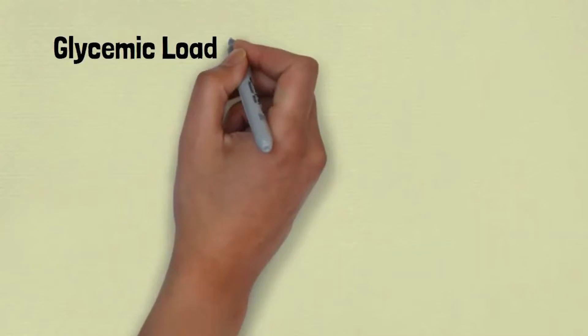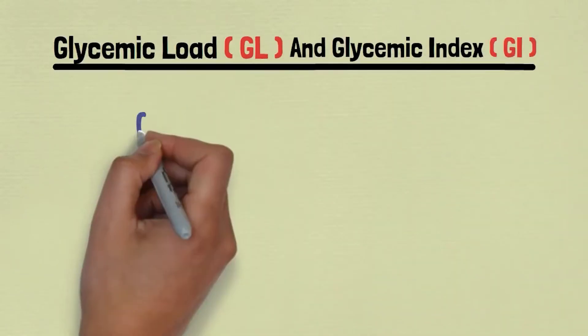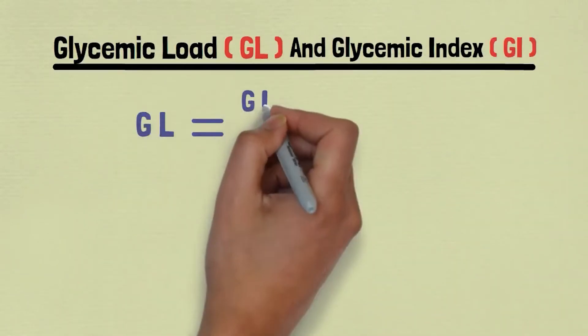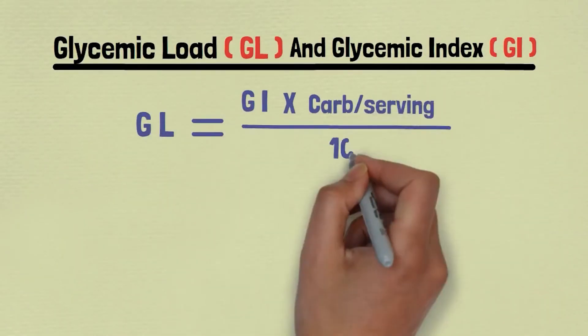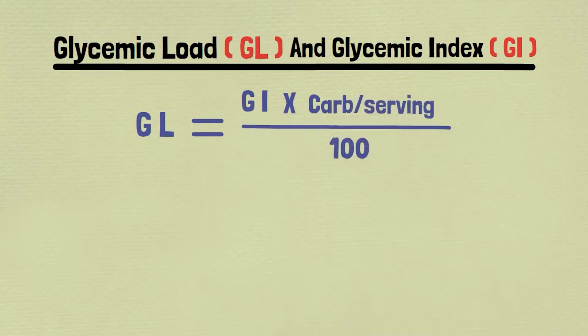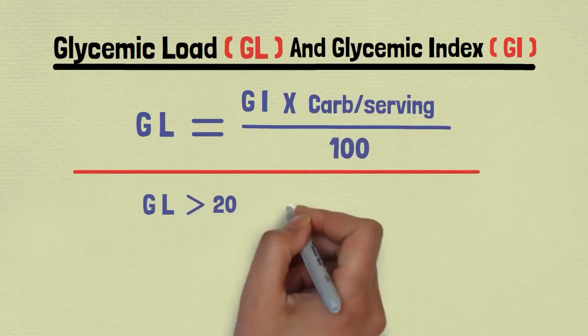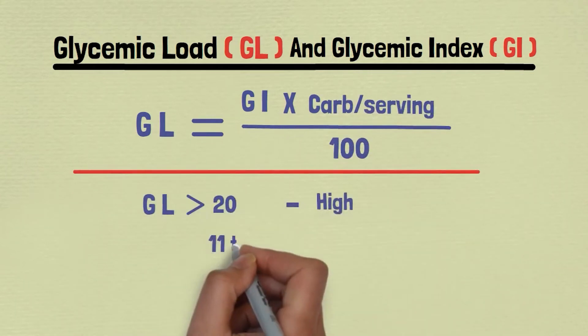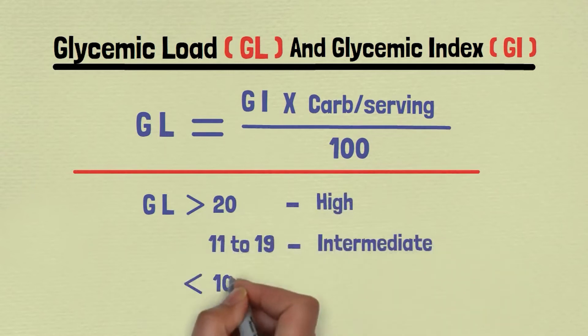Glycemic load helps you decide whether a particular food is going to fluctuate your blood sugar too much. The formula for glycemic load is: glycemic index multiplied by carbohydrate per serving, divided by 100. A glycemic load more than 20 is considered high, 11 to 19 is intermediate, and less than 10 is low.